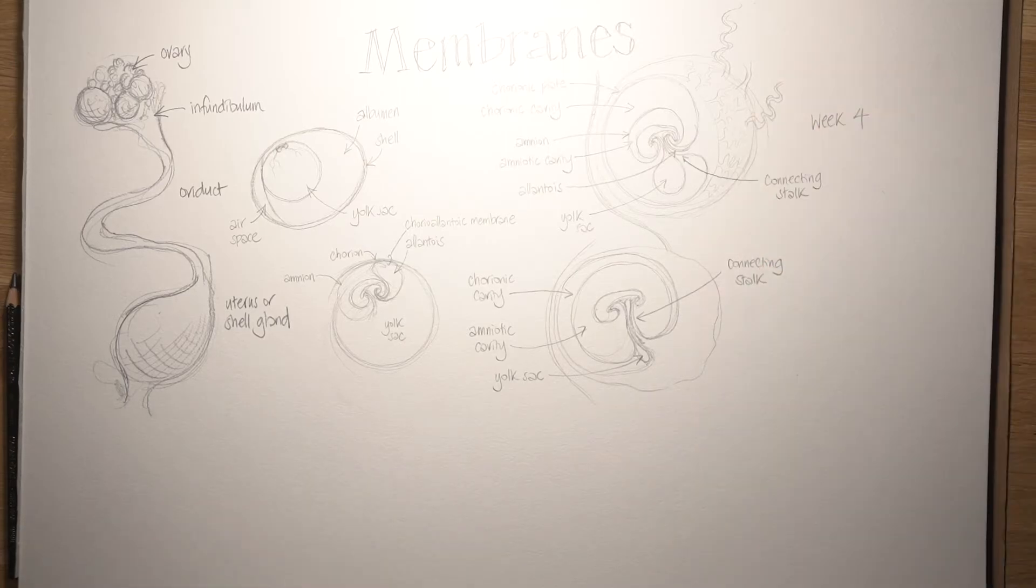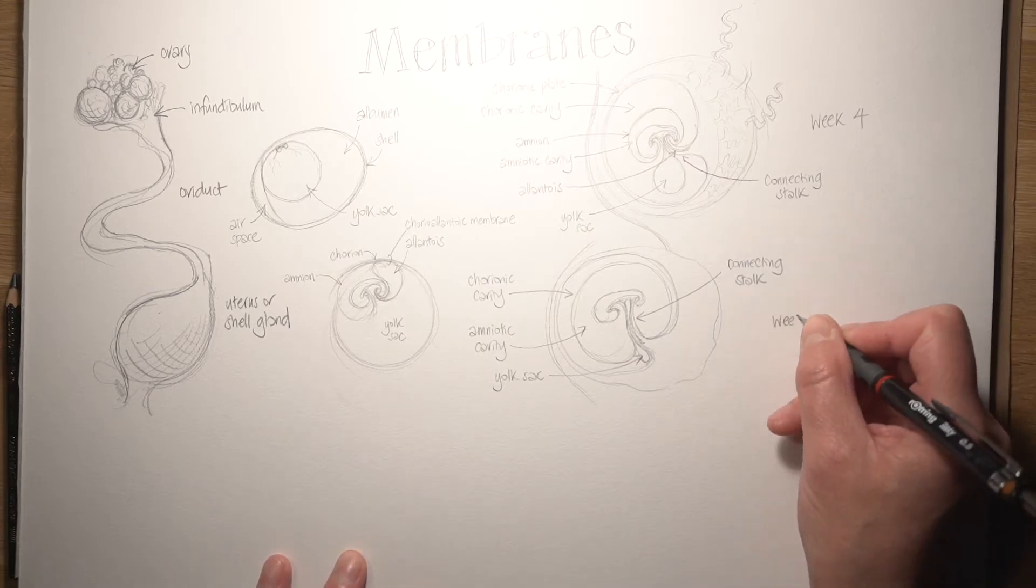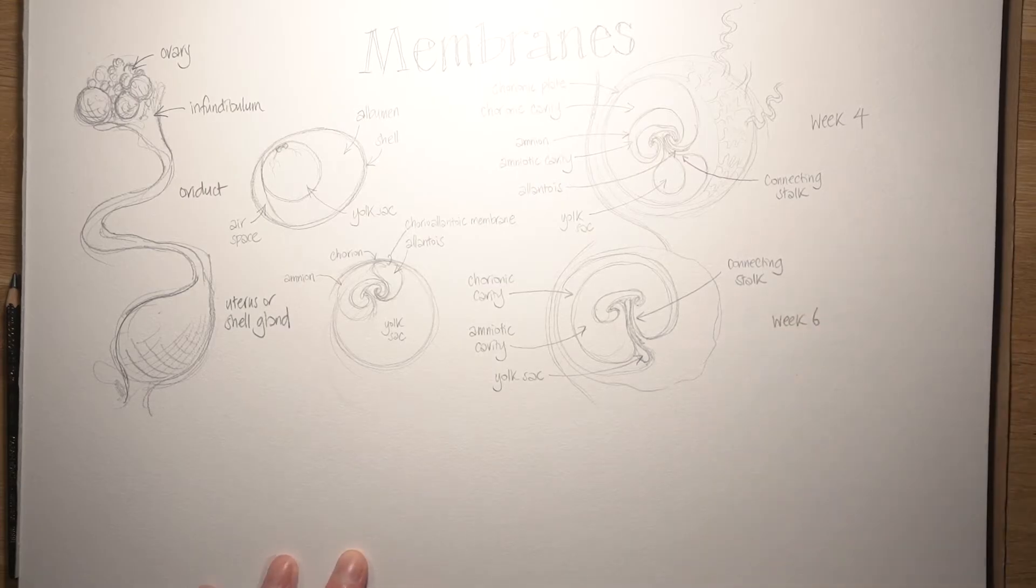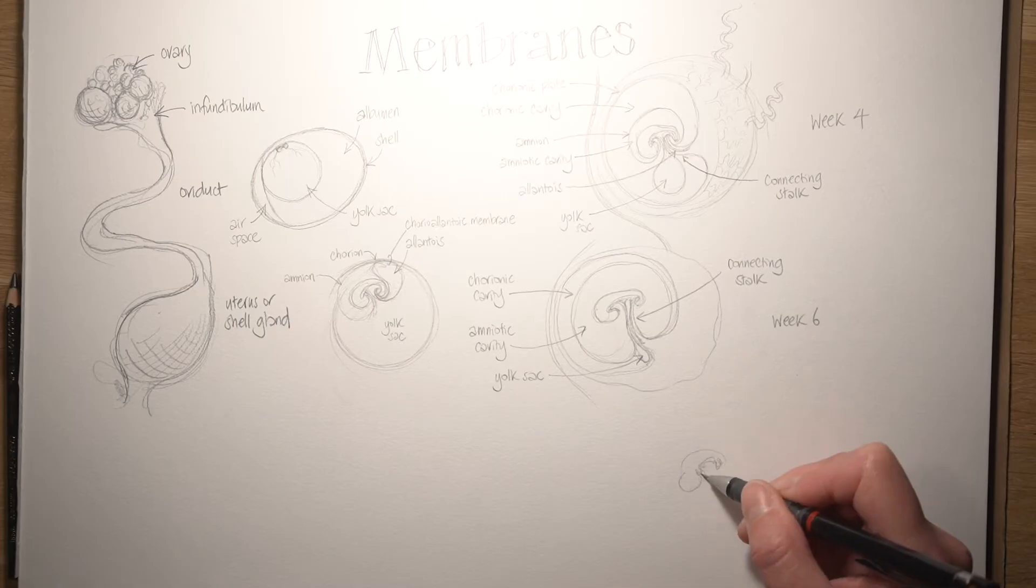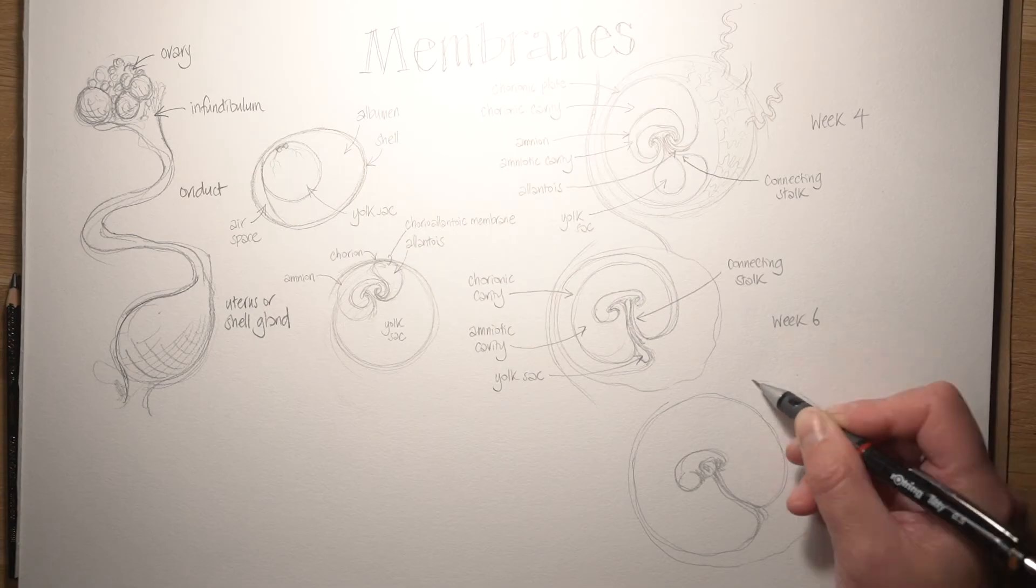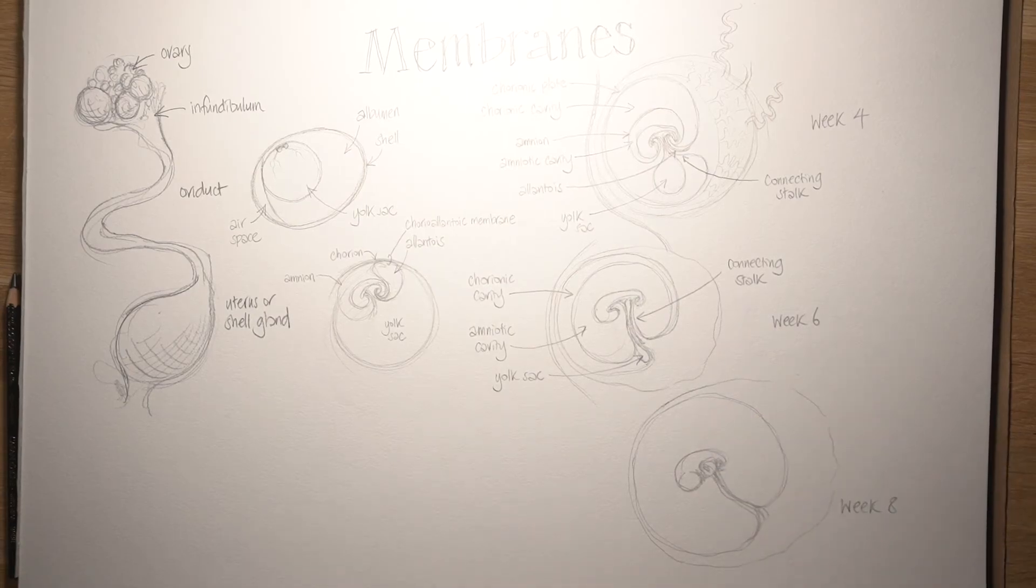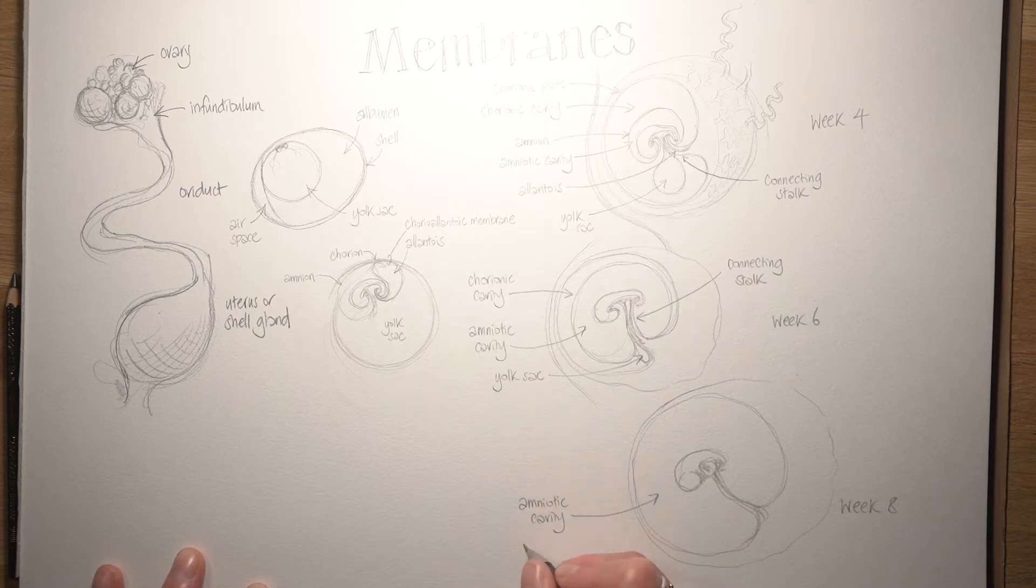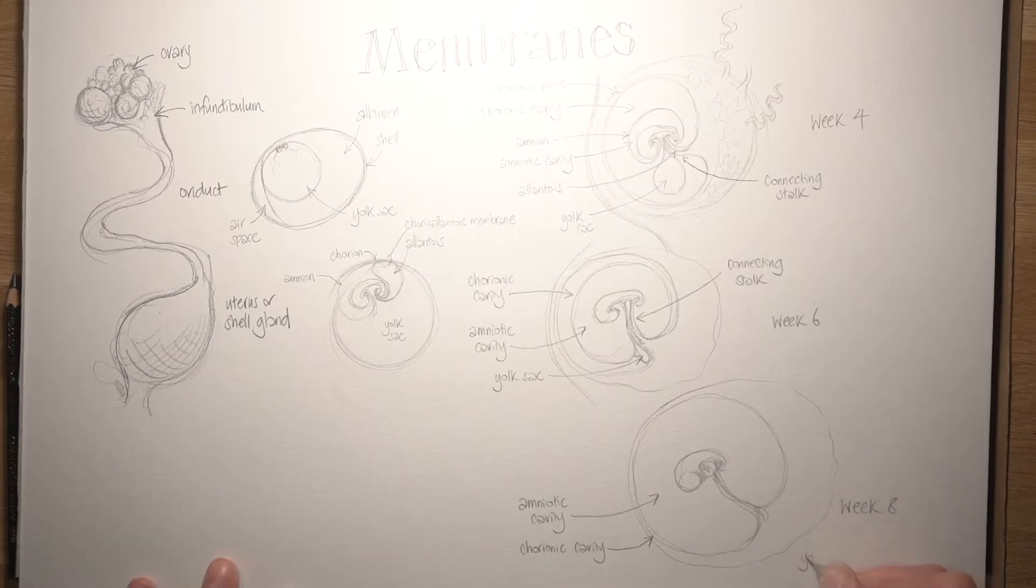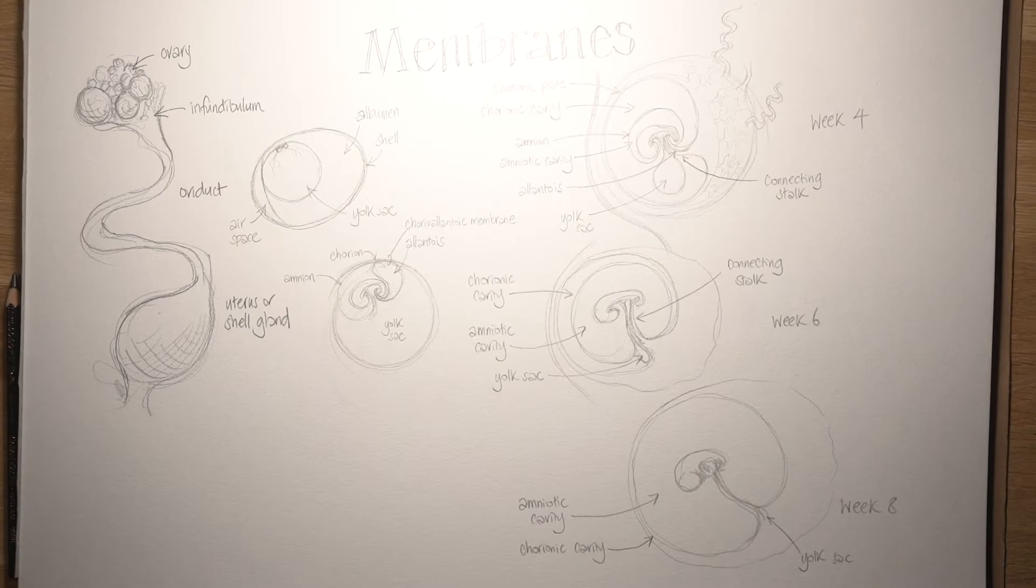That's connecting the embryo to the outer membranes, including what becomes the placenta, which forms its life support system. So now we're speeding ahead another couple of weeks to week eight of human embryological development. You can see the embryo is bigger and it's got arms and legs by this point. The amniotic cavity has massively expanded and it has squashed the chorionic cavity almost out of existence. The yolk sac has almost disappeared.